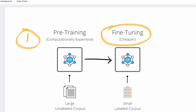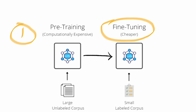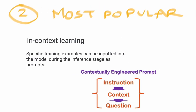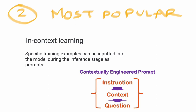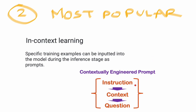Option two is the most popular option, and it's in-context learning. In this case, you have a prompt, and during the creation of that prompt you can input some examples into the model during the inference stage. A contextually engineered prompt typically has three components: an instruction, some context, and a question around that context.